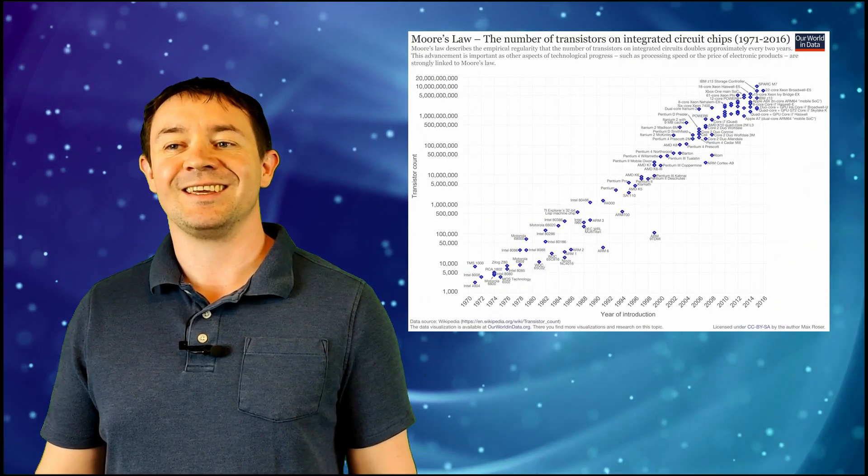While some would have us believe that Moore's Law, the doubling of transistor density every 18 months or so, will yield intelligent computers in the next 10 to 15 years, a little basic logic paints a very different picture.